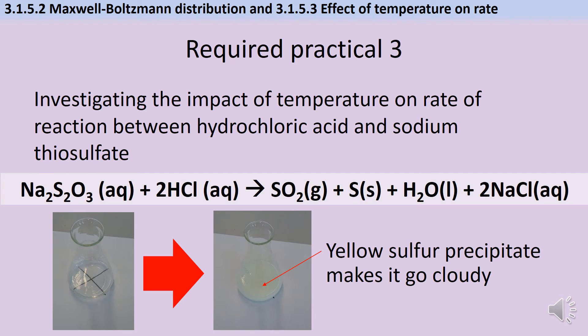So in this example the reaction makes sulfur and that yellow precipitate makes the solution go cloudy and makes the cross disappear.